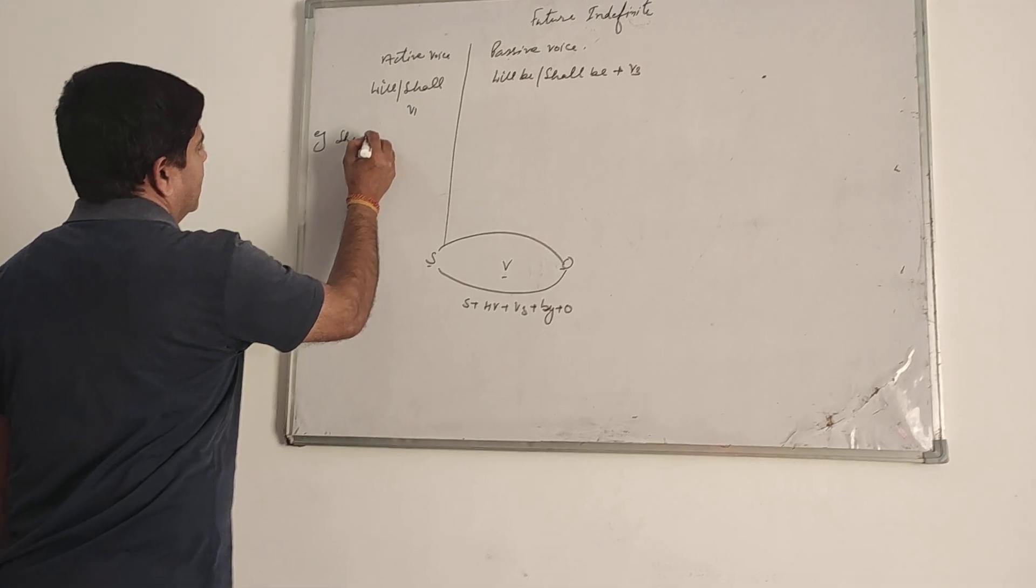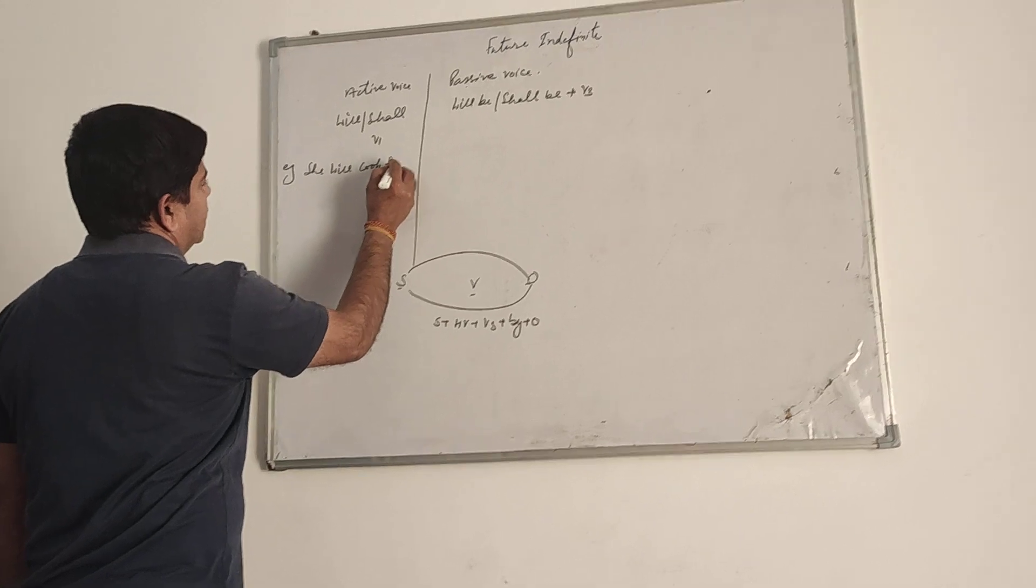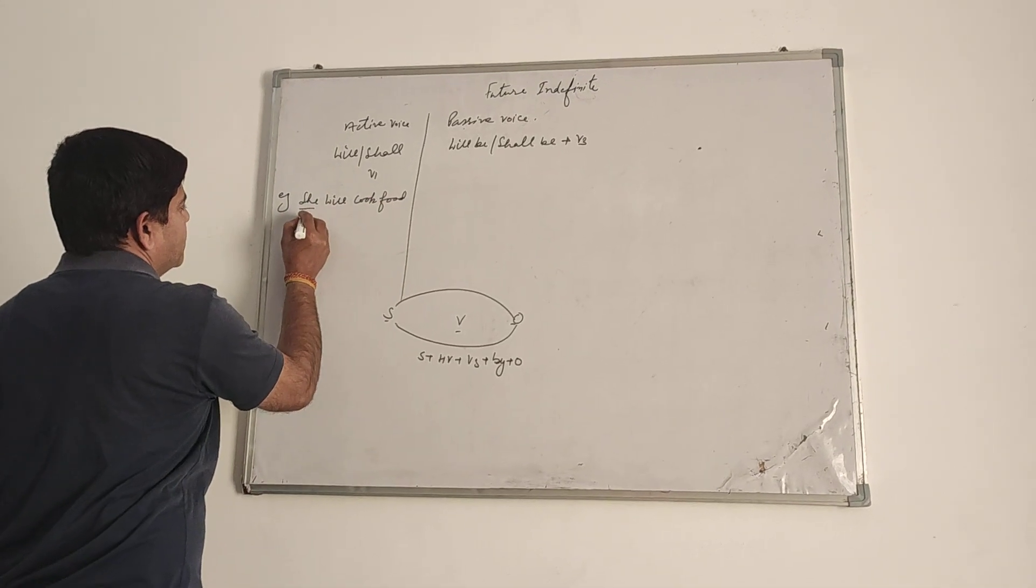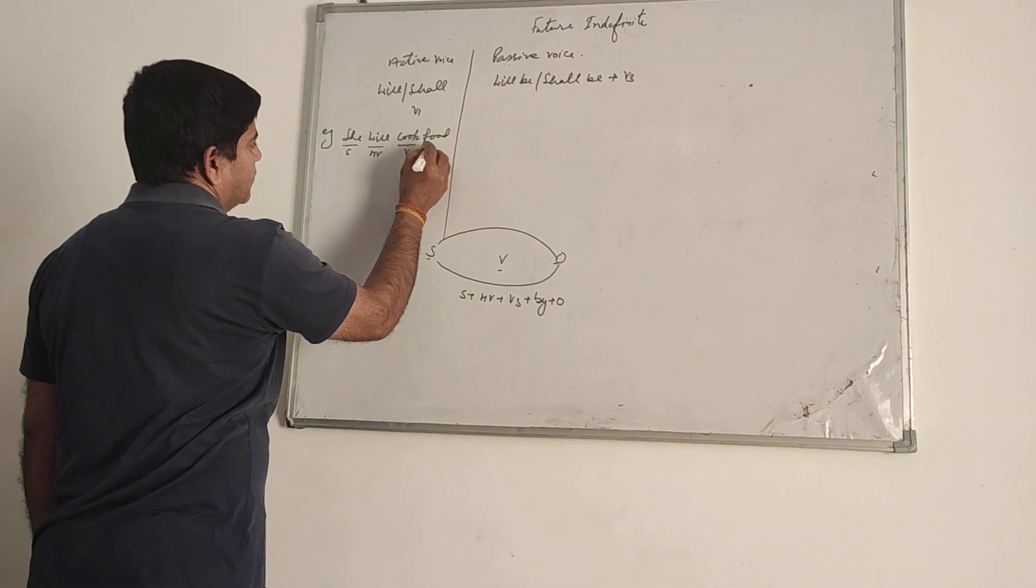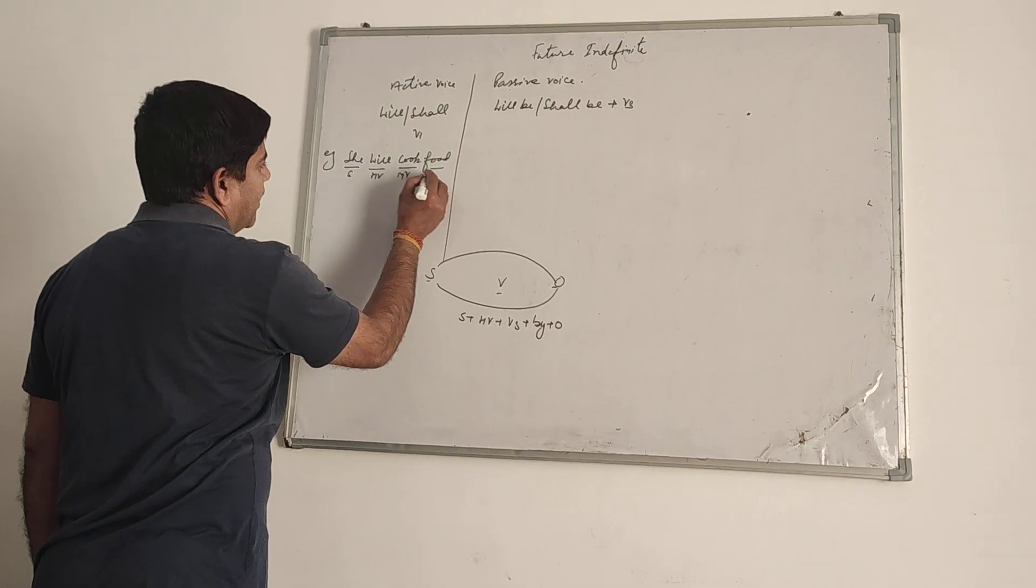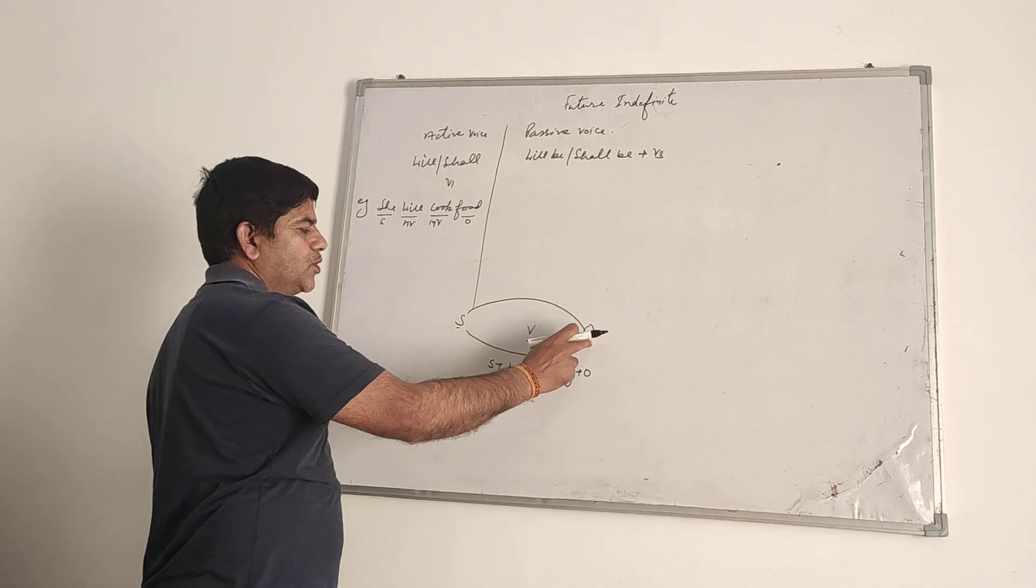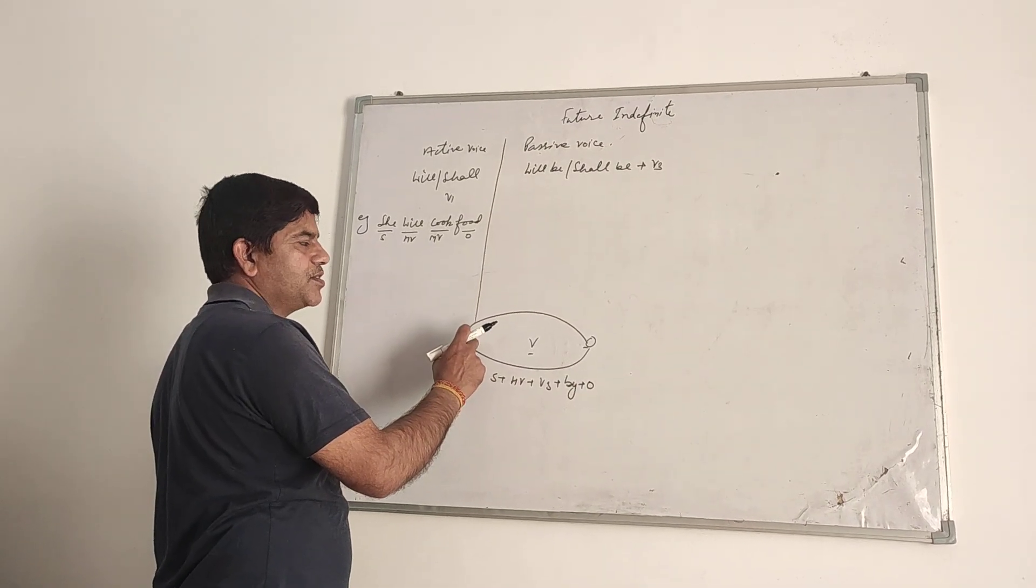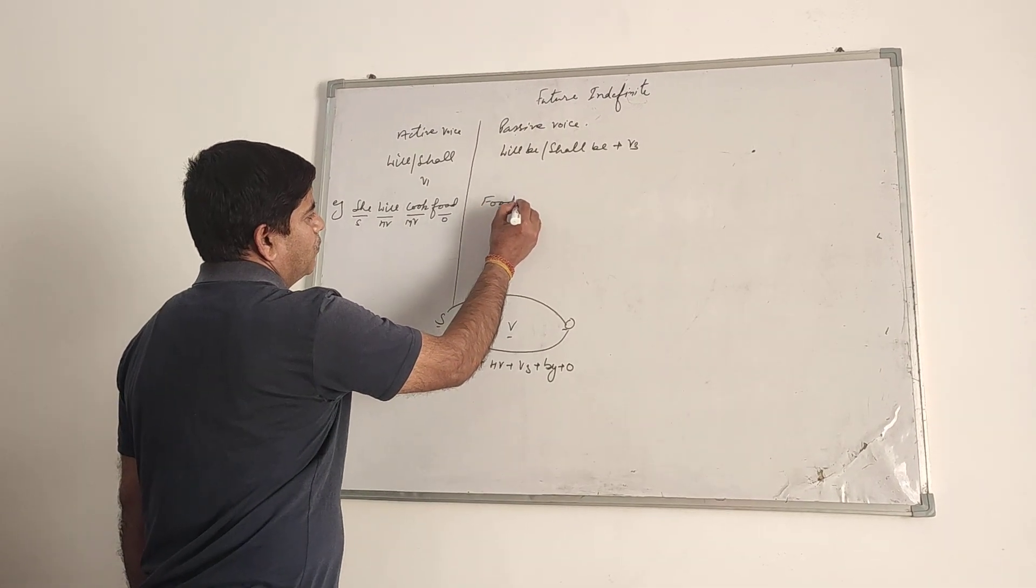She will cook food. She is the subject here, will is the helping verb, cook is the verb, main verb, and food is the object. So as I have told you, object will take the place of subject. So food will come first. F will be capital here. Food.